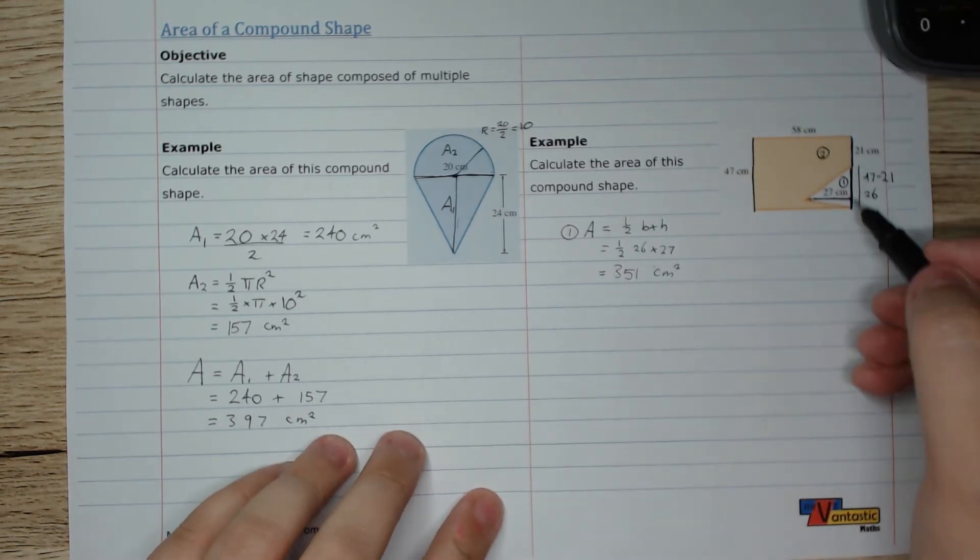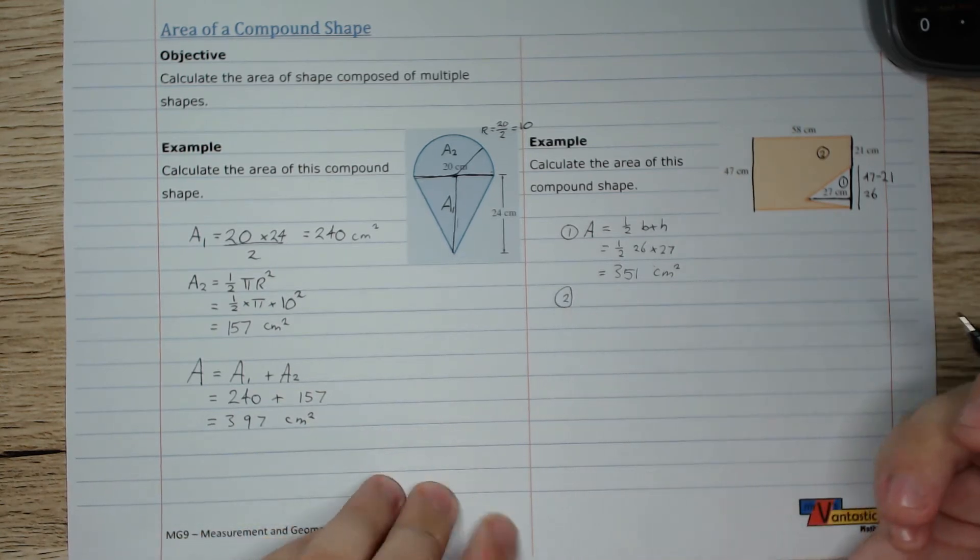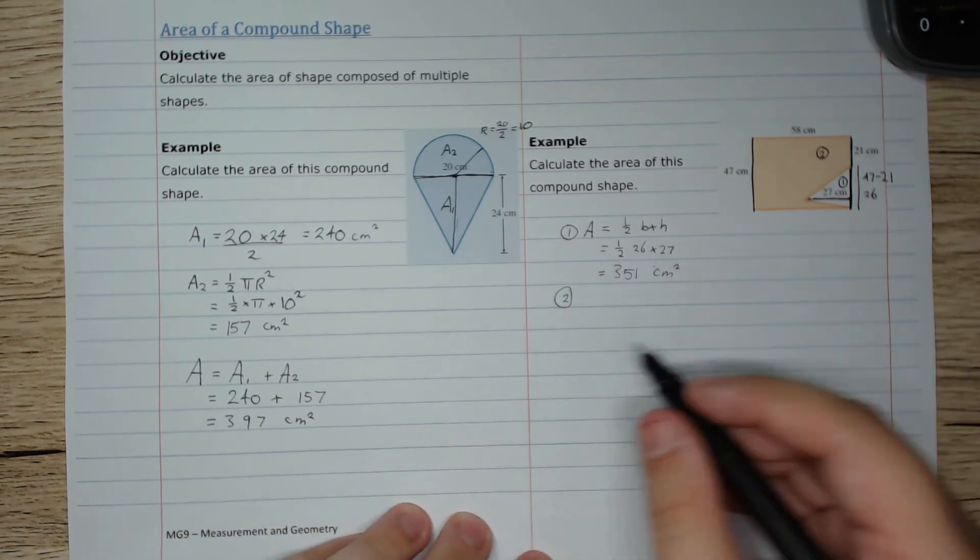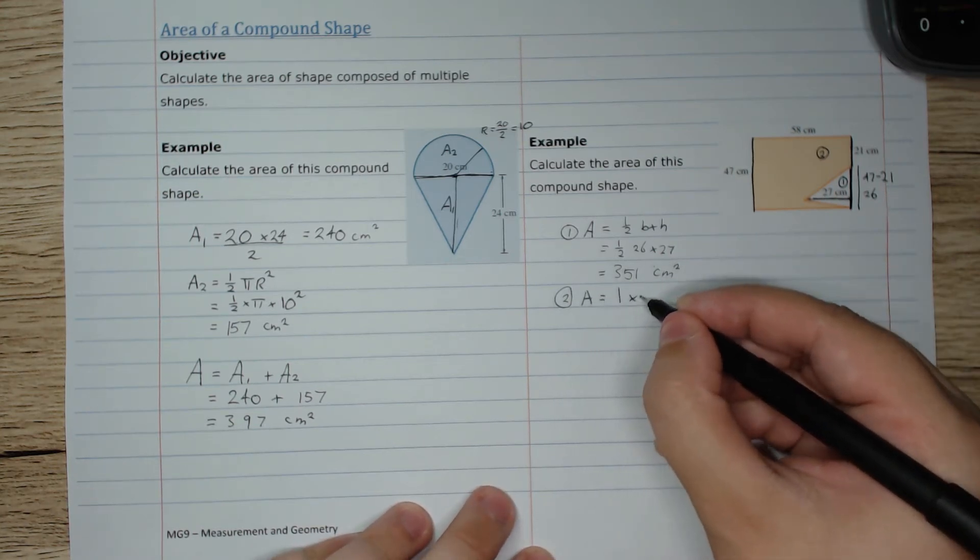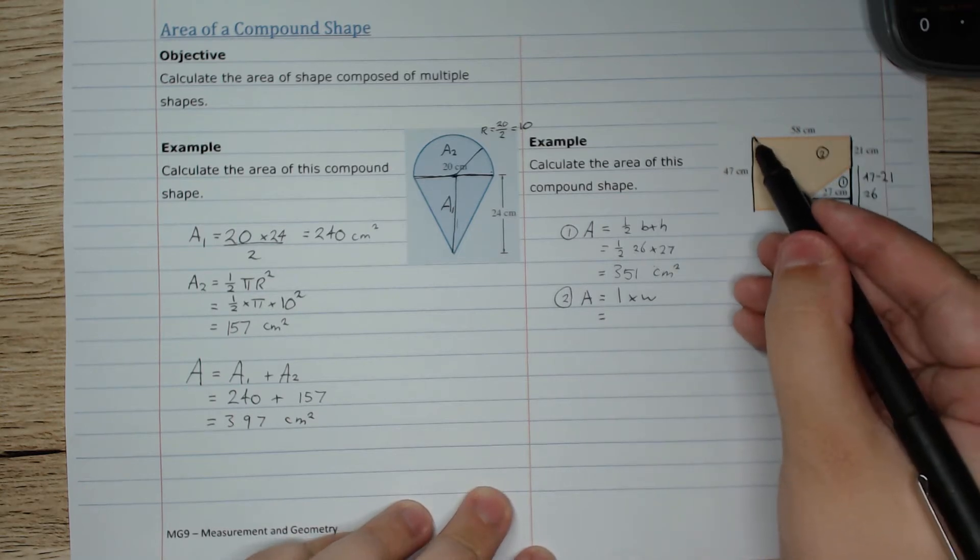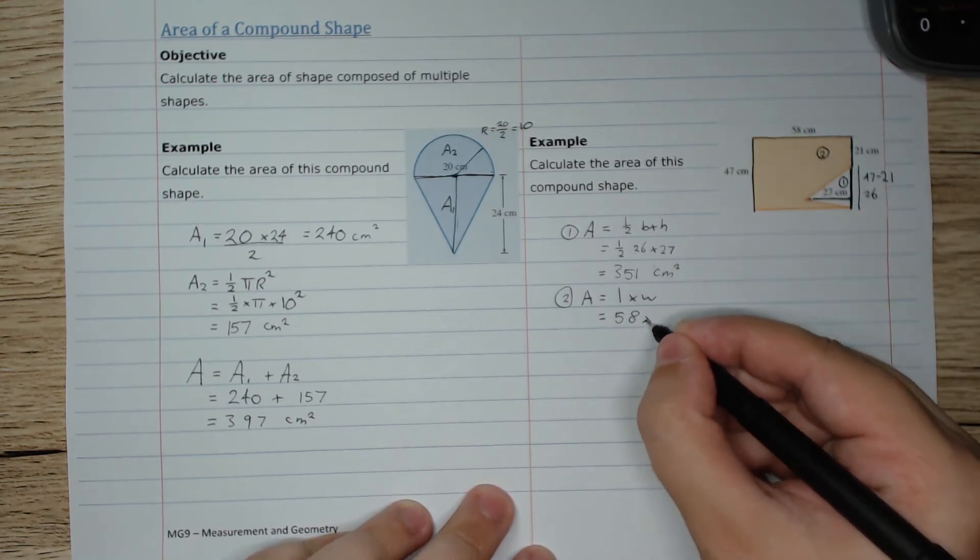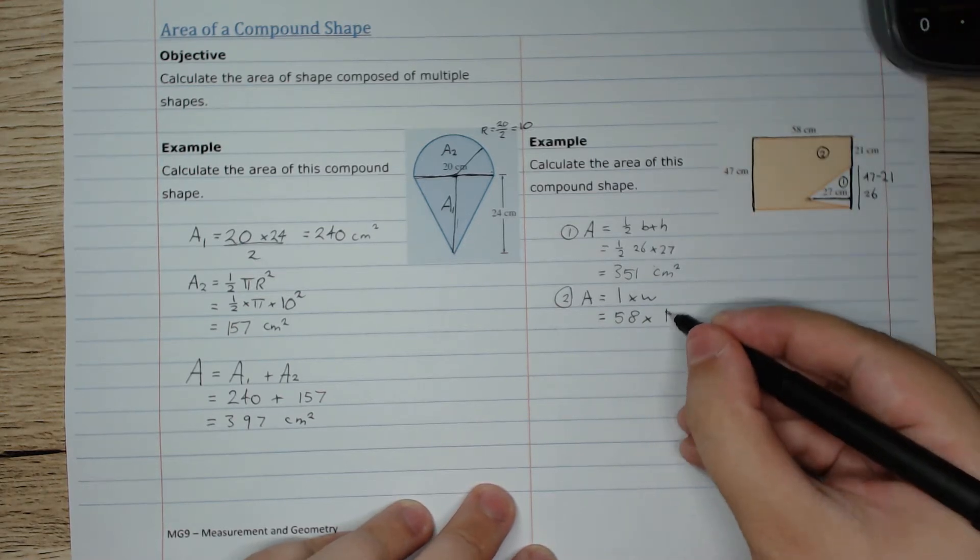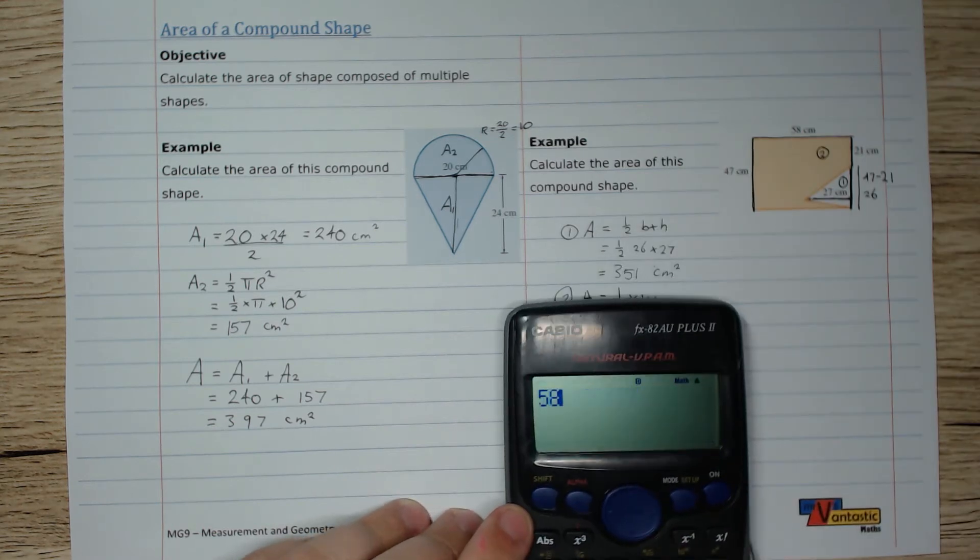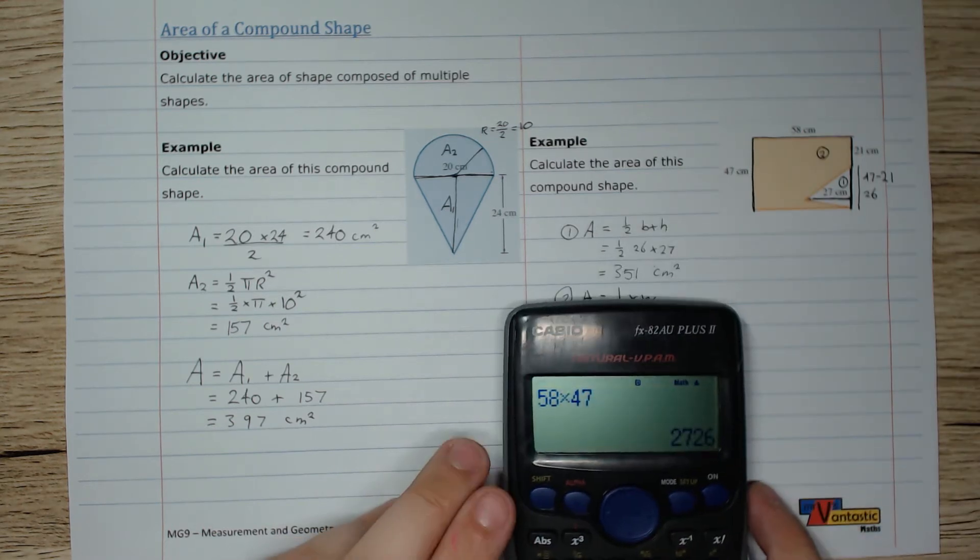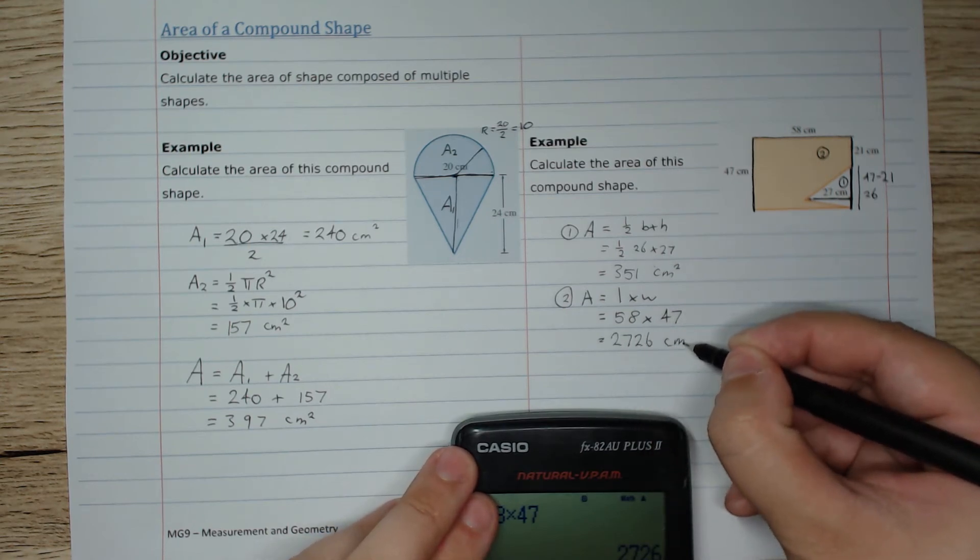You'll notice that the order in which I calculate these separately doesn't actually matter, as long as you stick them together at the end correctly. So area two is a rectangle, so it's length times width. The length of my rectangle is 58 by the width is 47, and 58 by 47 is 2726 centimeters squared.